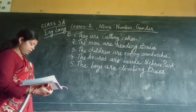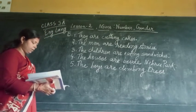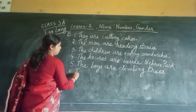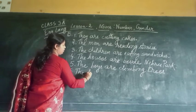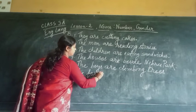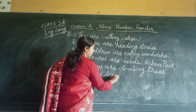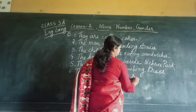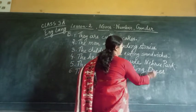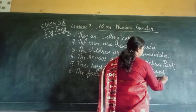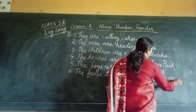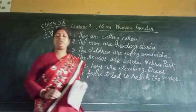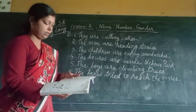Number 6: The fox tried to reach the vine. The answer is: The foxes tried to reach the vines.